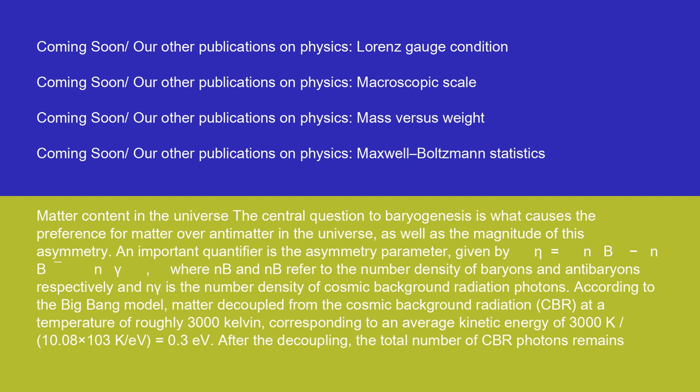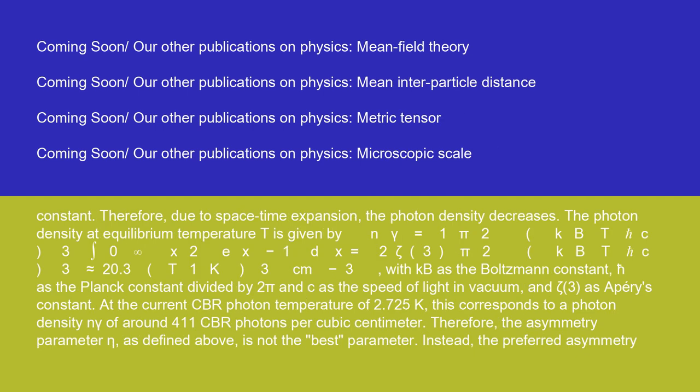After the decoupling, the total number of CBR photons remains constant. Therefore, due to spacetime expansion, the photon density decreases. The photon density at equilibrium temperature T is given by N_γ = (1/π²)(k_B T/ℏc)³ ∫₀^∞ x²/(eˣ−1) dx = (2ζ(3)/π²)(k_B T/ℏc)³ ≈ 20.3 (T/1K)³ cm⁻³, with k_B as the Boltzmann constant, ℏ as the Planck constant divided by 2π, c as the speed of light in vacuum, and ζ(3) as Apéry's constant. At the current CBR photon temperature of 2.725 K, this corresponds to a photon density N_γ of around 411 CBR photons per cubic centimeter.